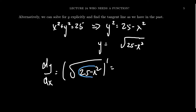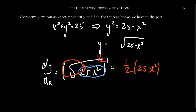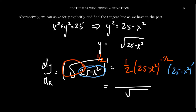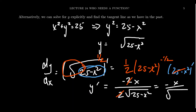We think of the square root as the one-half power, which makes the calculus easier. By the chain rule, we get one-half times 25 minus x squared to the negative one-half power, multiplied by the inner derivative of 25 minus x squared. The 25 minus x squared to the negative one-half becomes the square root in the denominator. The derivative of 25 minus x squared gives us negative 2x, the twos cancel, and we end up with y prime equals negative x over the square root of 25 minus x squared.